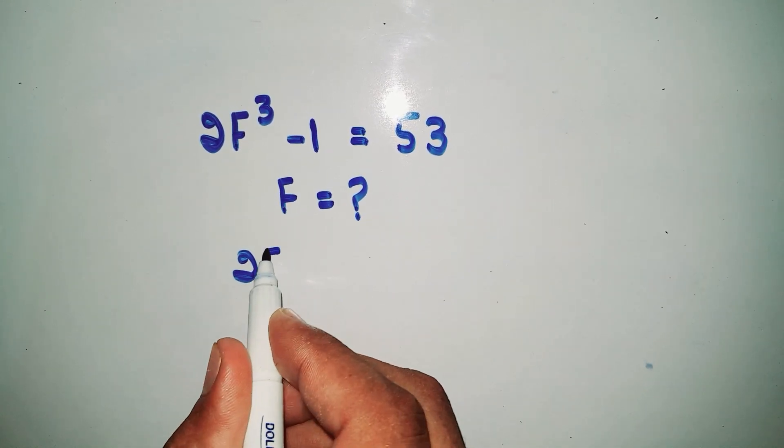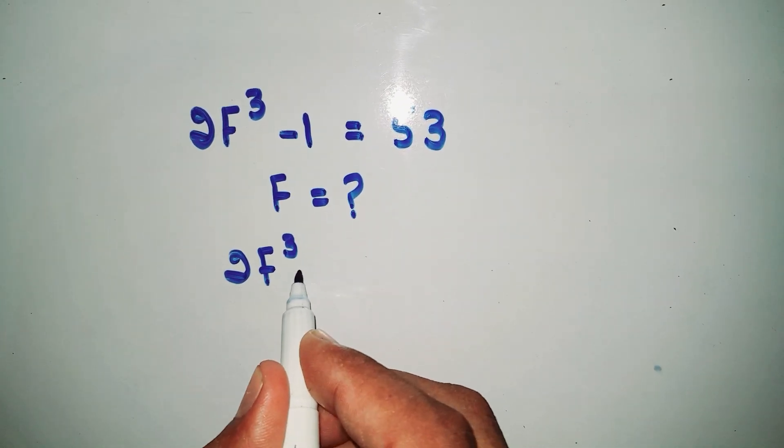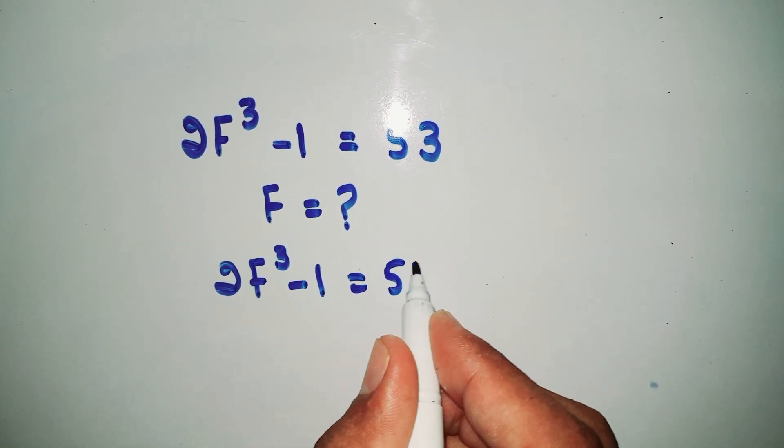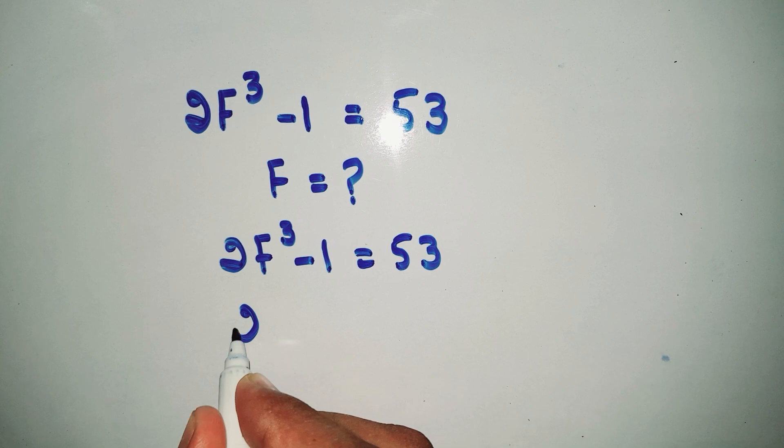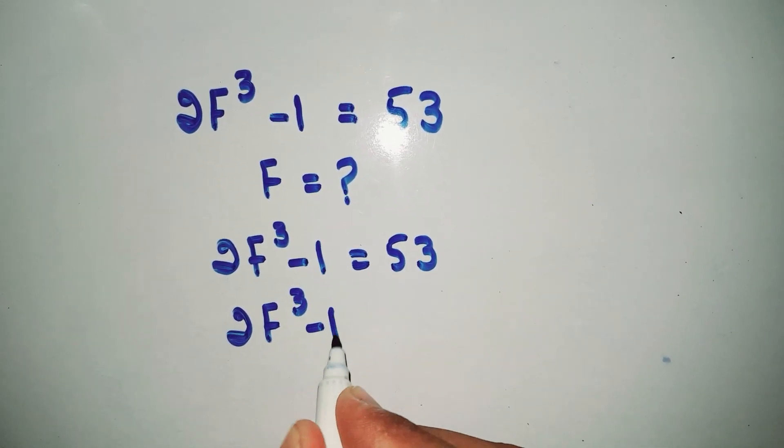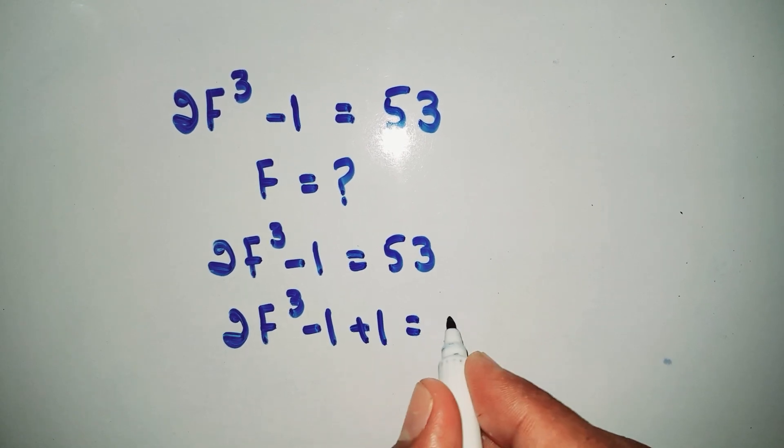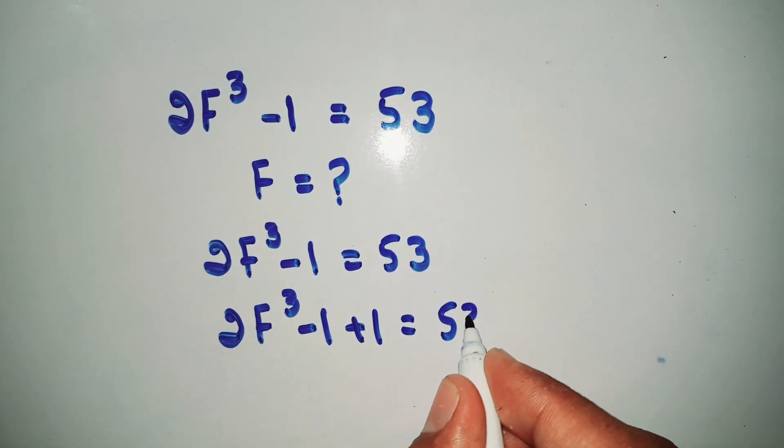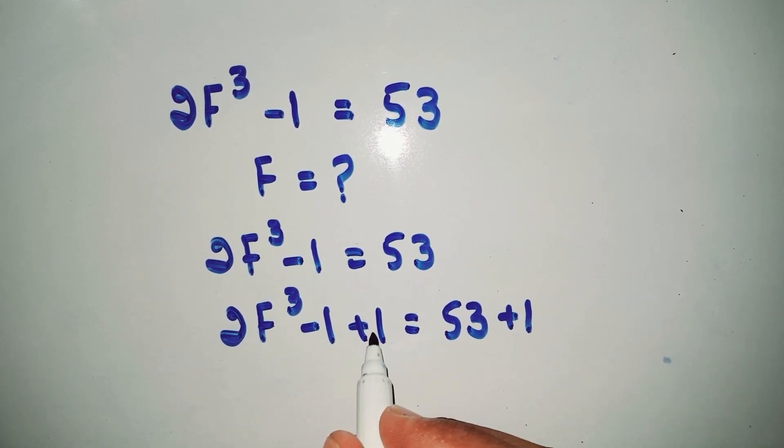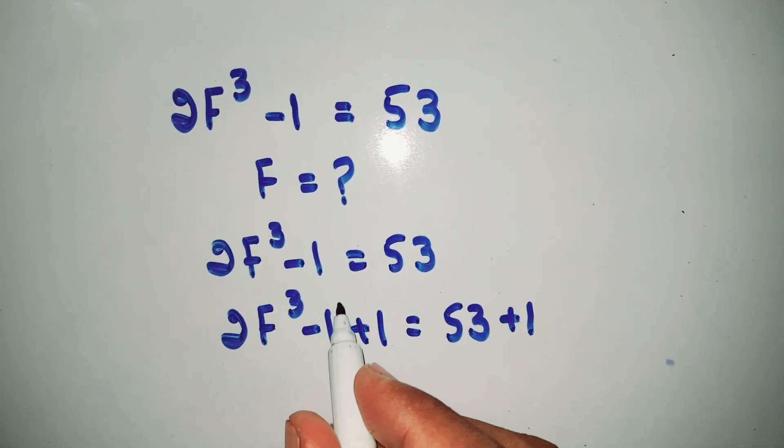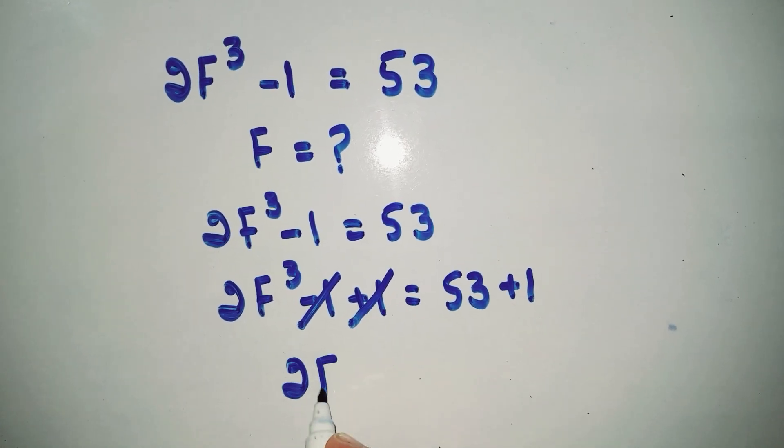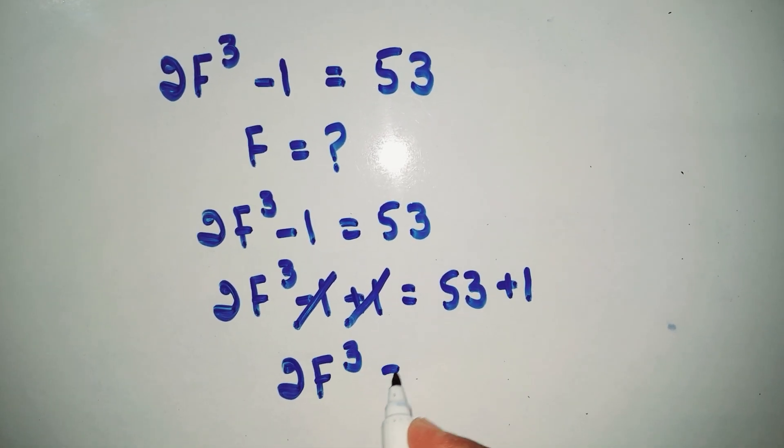Now here we write 2F³ - 1 + 1 = 53 + 1. We have to cancel this minus 1, so we take plus 1 this side and plus 1 this side. So minus 1 and plus 1 is cancelled out. We write 2F³ = 54.